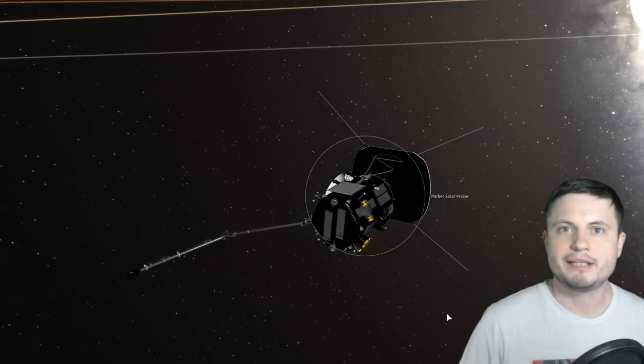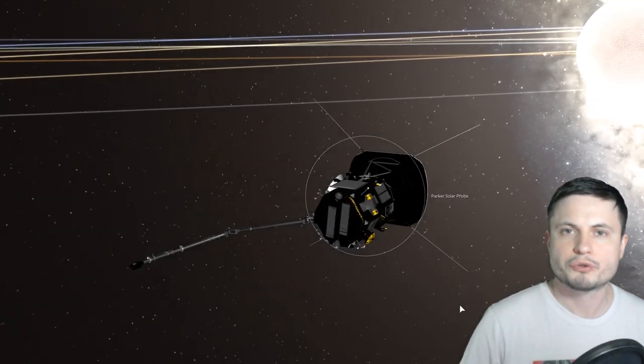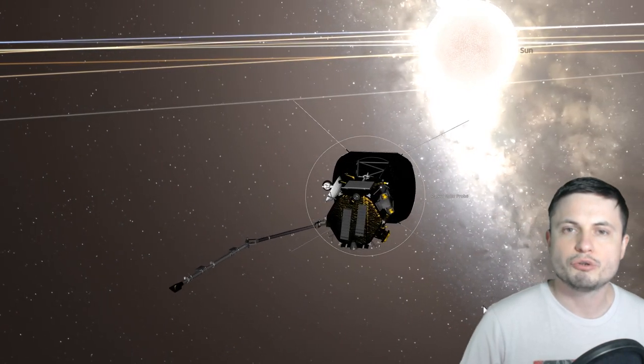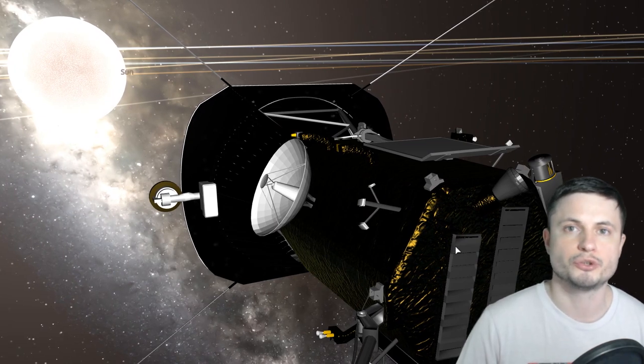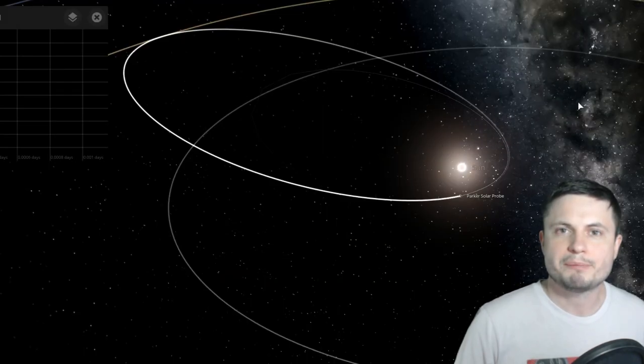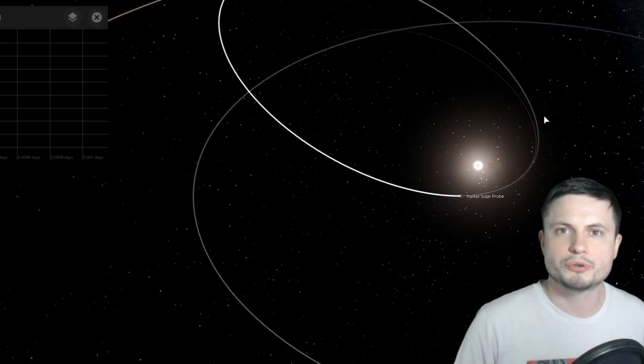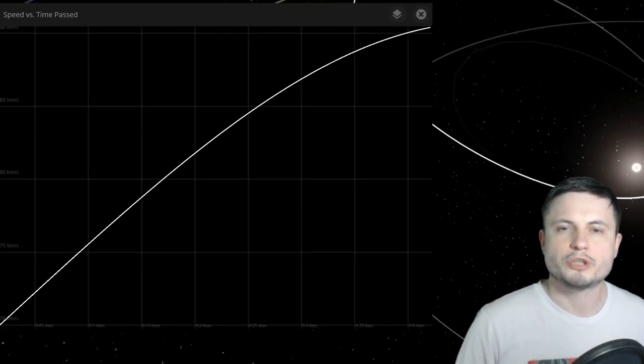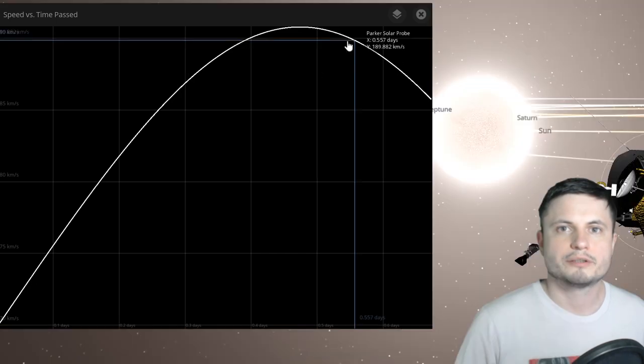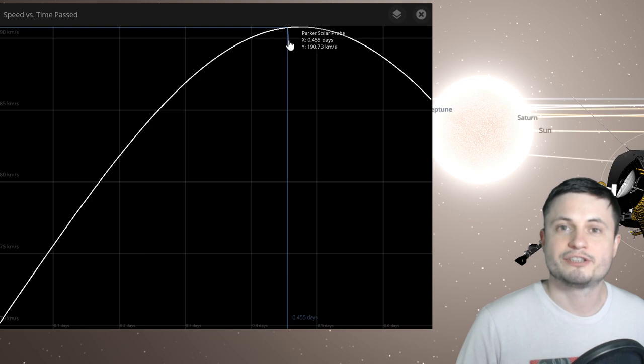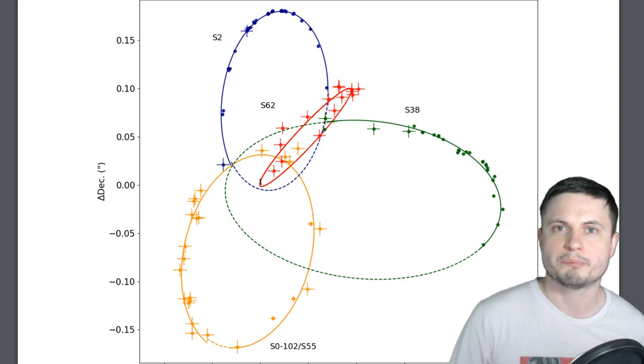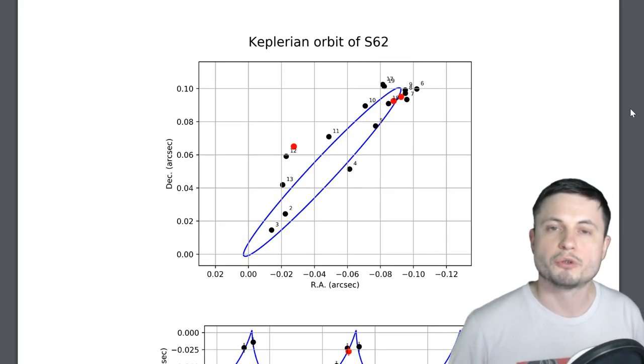Just to give you a perspective here, the fastest man-made object, which is of course the Parker solar probe, is going to reach its highest velocity in 2024 when it's at the closest to the sun. And so right here at the periapsis of its orbit, at the closest approach to the sun, the maximum reached velocity is going to be approximately 190 km per second. That's dramatically lower than the 30,000 km per second that S62 has when it approaches Sagittarius A star, which is also about four times higher than the previous record holder S2.